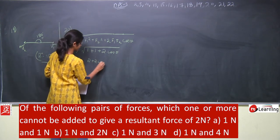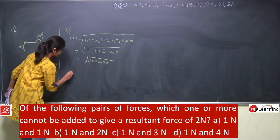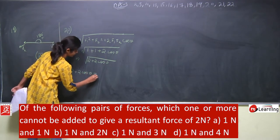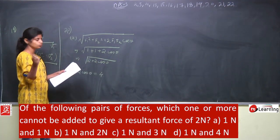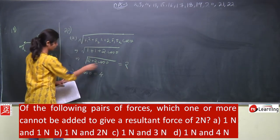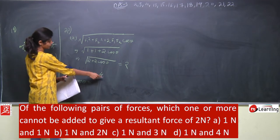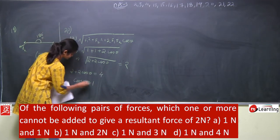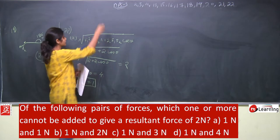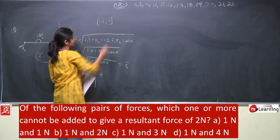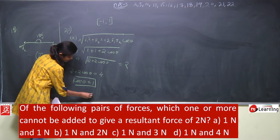This comes out to be 2 + 2·cos θ. If the resultant equals 2, then squaring both sides: 2 + 2·cos θ = 4, which gives cos θ = 1. The range of cos θ is −1 to 1, so cos θ = 1 is acceptable. In that case, theta equals zero degrees. So case A is acceptable.